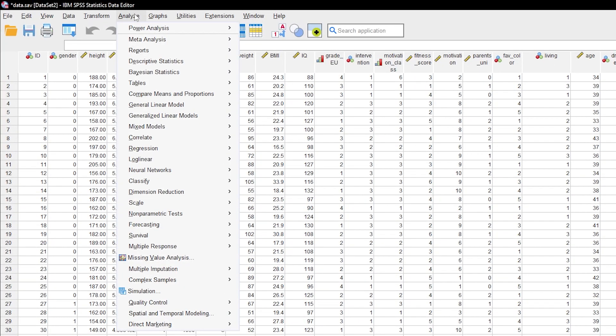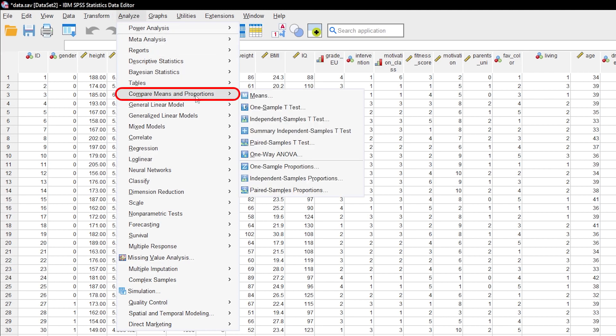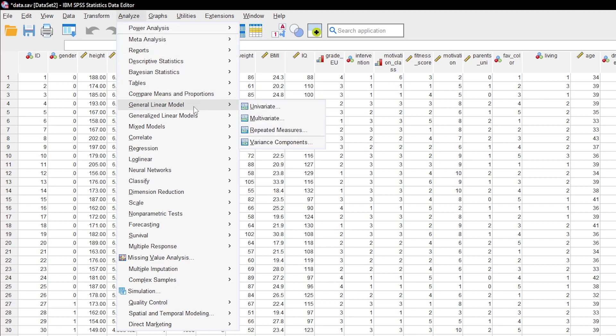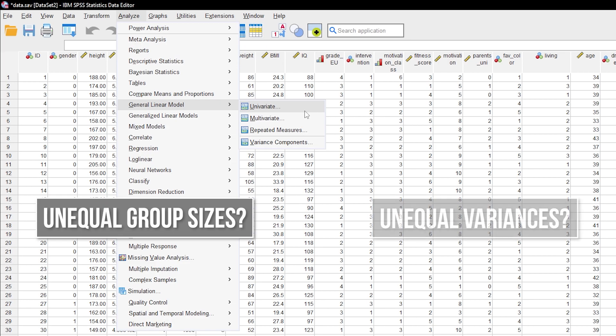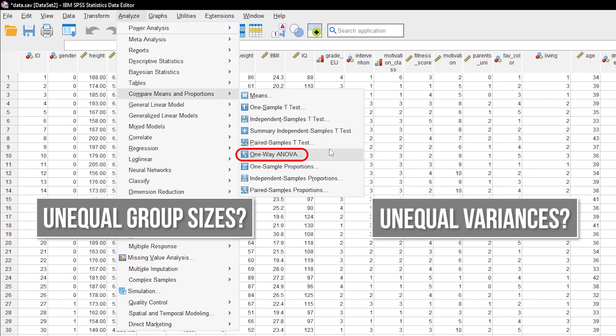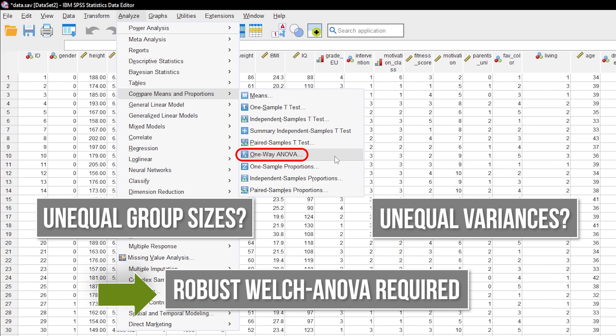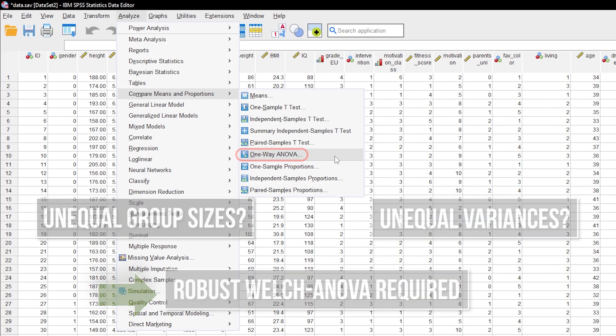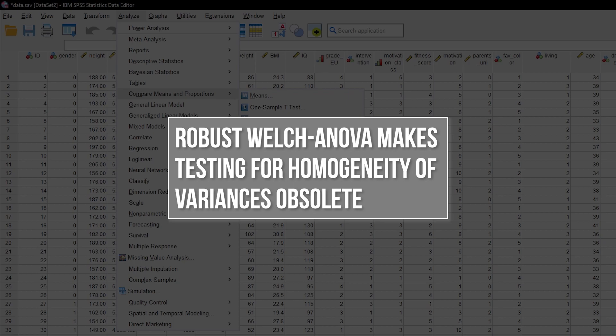To do the one-way ANOVA you have two options. Either go through Analyze, Compare Means and Proportions, one-way ANOVA, or General Linear Model, Univariate. If you have unequal group sizes and also unequal variances, you might want to choose the first path because you can request a robust calculation, also called the Welch ANOVA. This is especially important because it saves you from going through the trouble of having to test for equal variances in the first place.